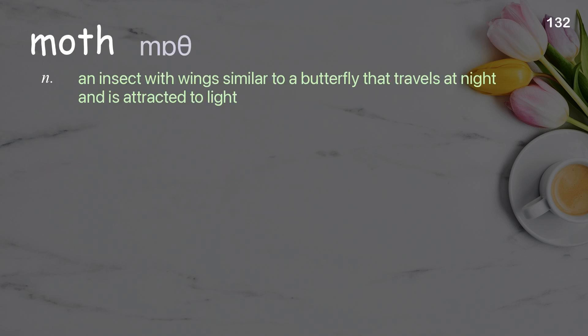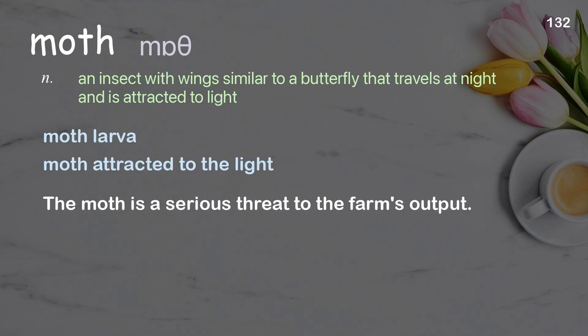Moth: an insect with wings similar to a butterfly that travels at night and is attracted to light. Examples: moth larva, moth attracted to the light. The moth is a serious threat to the farm's output.